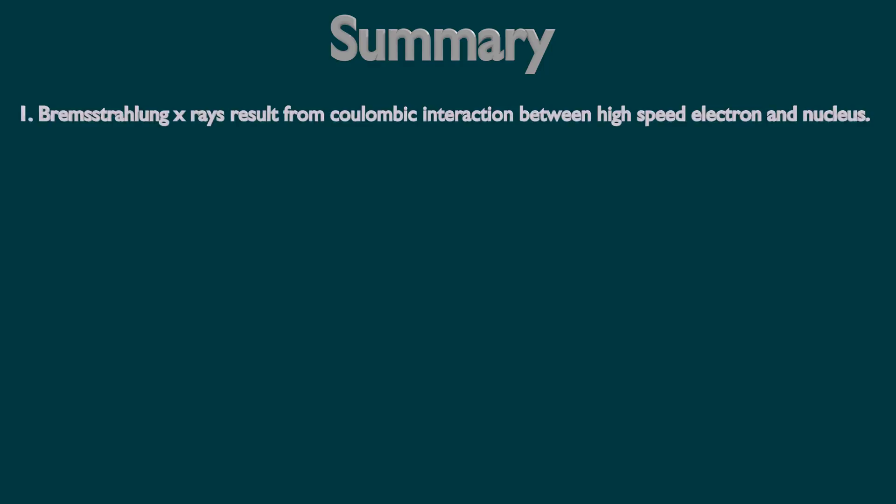Bremsstrahlung X-rays result from coulombic interaction between high-speed electron and nucleus. Energy of Bremsstrahlung X-ray equal to the kinetic energy lost by electron.